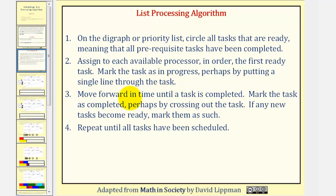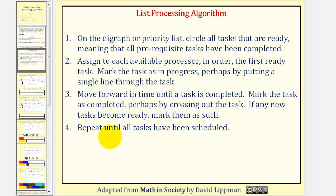Step three: move forward in time until a task is completed. Mark the task as complete, perhaps by crossing out the task. If any new tasks become ready, mark them as such. Step four: repeat until all tasks have been scheduled.